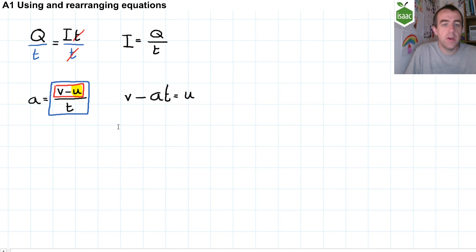While that equation was perfectly correct, it's more neat to write it V minus AT equals U. And it's better to put the subject on the left-hand side.